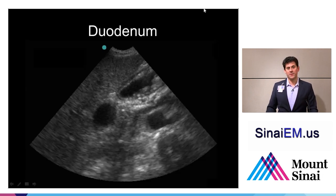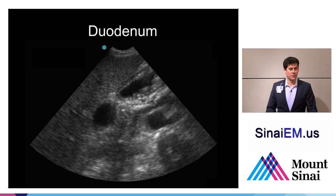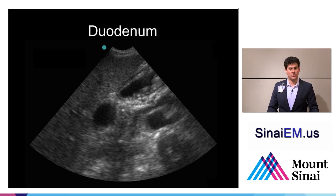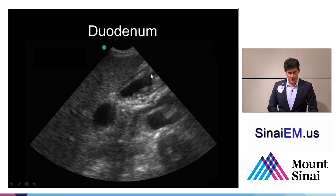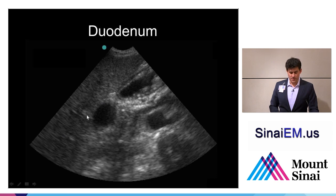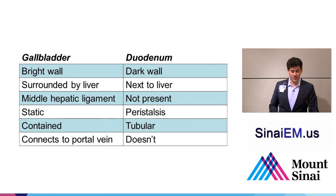Another structure that's really important to keep in mind is the duodenum. The duodenum is a fluid-filled structure that exists in the right upper quadrant, right near the liver and the gallbladder. The duodenum can look like a terrible-looking gallbladder — it can look like a gallbladder with an inflamed wall, stones, sludge — and can fool you when you're first starting out into thinking it looks like a pathologic structure. Here we can see the duodenum, the gallbladder, and liver taking up the left side of the screen.